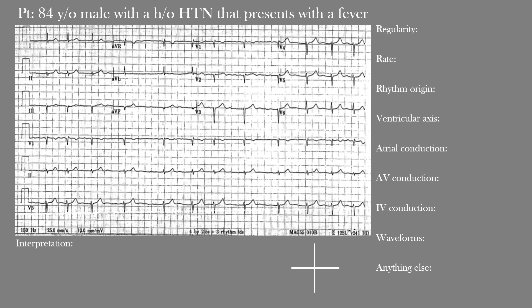When we look at regularity, we're looking for regular R-to-R intervals. If we use this R wave to the next one, you'll notice that interval is not the same as the one that follows. The interval from the next R wave is also not the same as those preceding it, and going through the whole strip there is no regularity to the rhythm whatsoever. Compare this to sinus arrhythmia, which does have some regularity — that would be called regularly irregular. In this case we have an irregularly irregular rhythm.